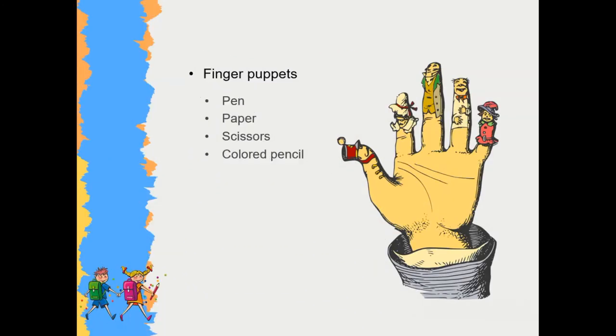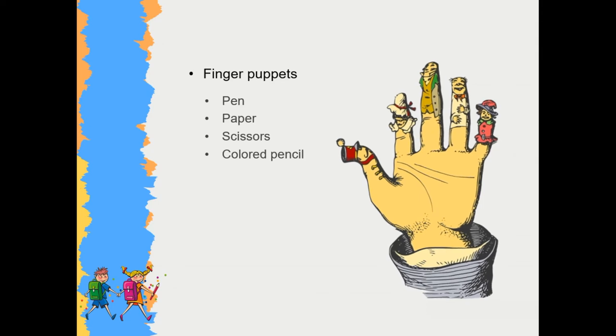For finger puppets, we need pen, paper, colored pencils, and scissors. We draw a face on our finger firstly. Then we need to create a hole in the center of paper so that our finger could fill it. Then we draw clothes on the paper and we paint it. Our finger puppet is ready to use.